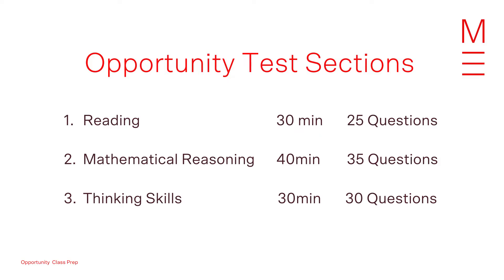Now you might be asking what exactly is tested in the opportunity class placement test? The test is divided into three sections. First is a reading test of 25 multiple choice comprehension questions in 30 minutes. The second section is a mathematical reasoning test of 35 multiple choice questions in 40 minutes. And the final section is a thinking skills test of 30 multiple choice questions in 30 minutes.